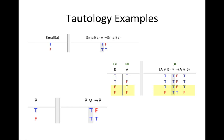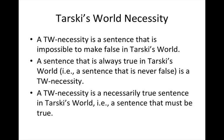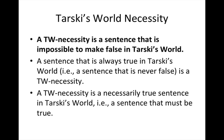So to review: a tautology is a sentence that is truth-functionally true on every row of the truth table in the column under the main connective. A Tarski's World necessity is a sentence that is impossible to make false in Tarski's World. A Tarski's World necessity is not the same as a tautology, although all tautologies are Tarski's World necessities — but the converse is not the case. A sentence that is always true in Tarski's World is a Tarski's World necessity.